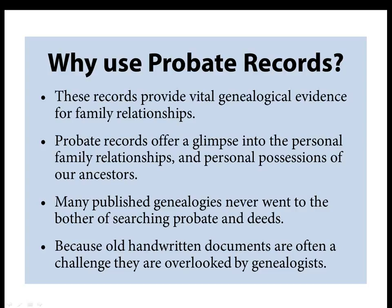The great genealogist Henry Fitzgalbert Waters was sent across in the 19th and early 20th centuries to look at English probate records that made reference back to families still living in New England. Probate records also offer a glimpse into the personal family relationships and the dynamics of family life — positive and negative. It also gives you the personal possessions of our ancestors. Basically, you find out who got what and sometimes you find out why they didn't get it.